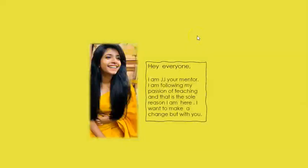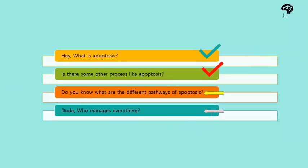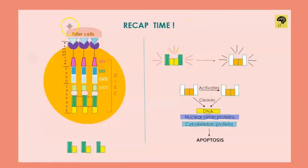Hello everyone, I'm JayJay. We have reached the climax of apoptosis — that is Part 5. So now you can probably say that you know what apoptosis is. You're just left with one topic: the intrinsic pathway and its regulation. Before getting into that, we will take a quick recap of the extrinsic pathway so you can compare it with the intrinsic pathway and know both very well.